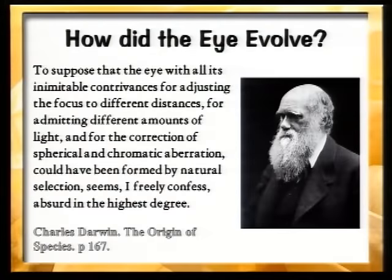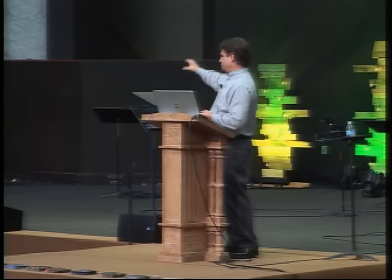Darwin himself spoke to the difficulty of explaining the evolution of the human eye, saying: 'To suppose that the eye, with all its inimitable contrivances for adjusting the focus to different distances, for admitting different amounts of light, and for the correction of spherical and chromatic aberration, could have been formed by natural selection, seems, I freely confess, absurd in the highest degree.' He then went on to attempt to explain how the eye could have evolved, which really amounted to little more than comparing eyes of different complexities across organisms — it didn't actually explain how something like the eye could evolve, but just pointed out several different levels of ocular complexity.